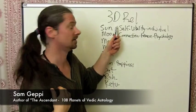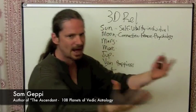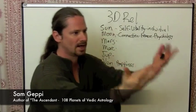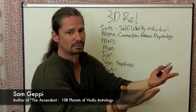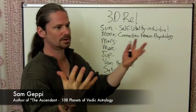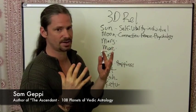That's the moon, and then the sun is what we express outward. The sun is very oriented towards individual self-expression. The moon is oriented towards connection with others.